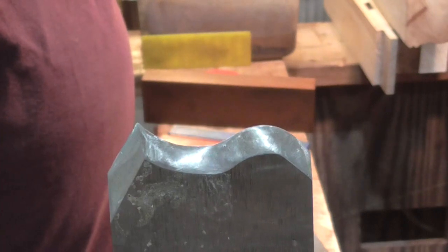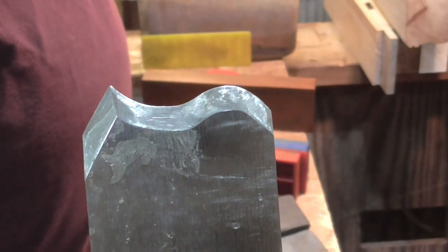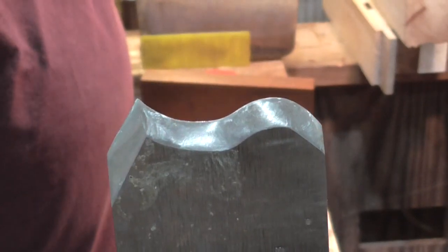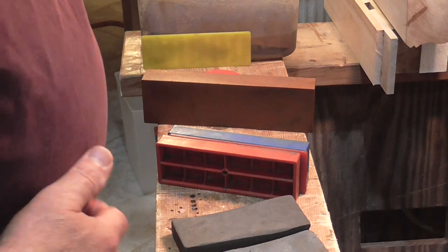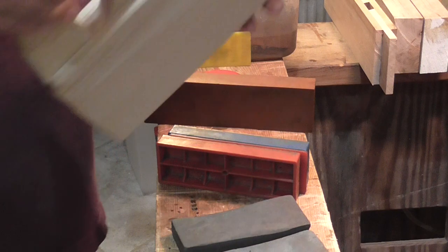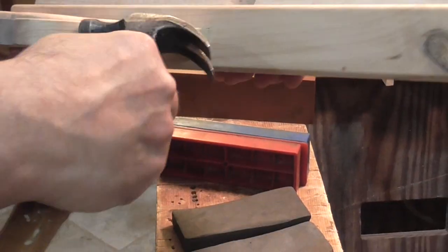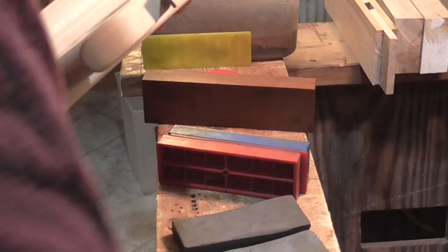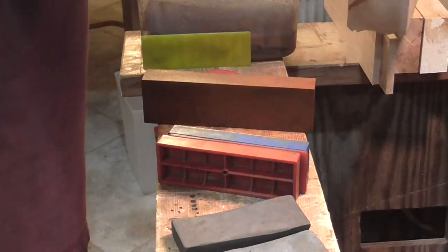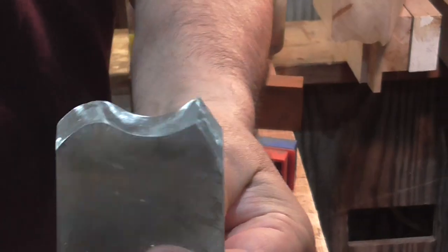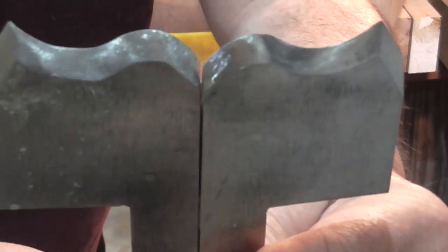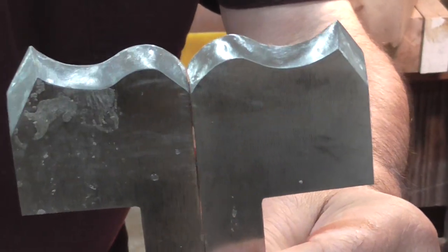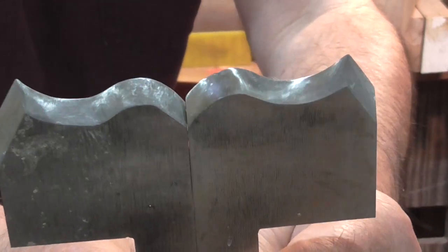Once you do it once or twice you'll see that it's pretty much self-explanatory and there isn't much else you can do because of the geometry that's involved. Now I happen to have made this plane as a set, a right and a left, so I'll just show everybody the other plane. If you happen to be making pairs what you'll see is that this other blade is basically the mirror image.